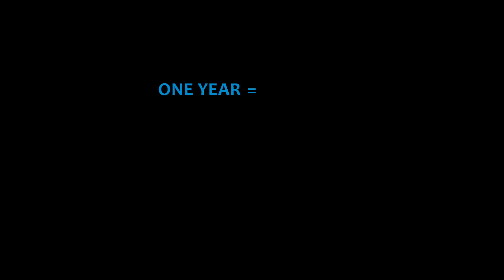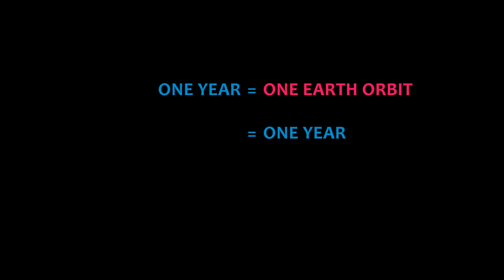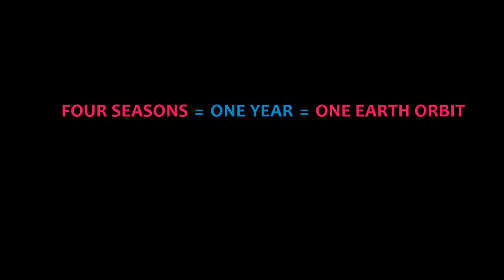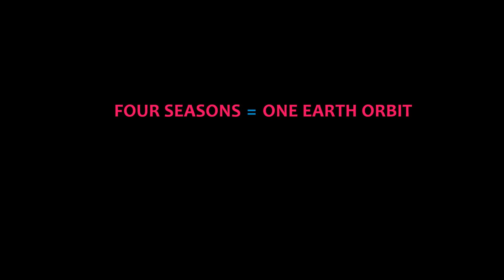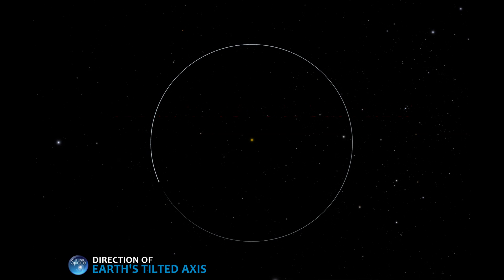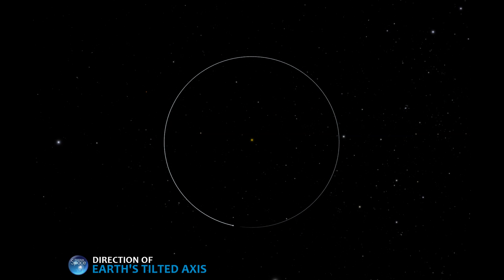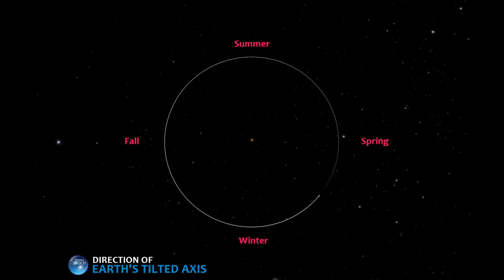It takes one year for Earth to complete just one orbit around the Sun. It also takes one year to complete four seasons. So that means we can say that it takes four seasons to complete one orbit around the Sun. That's why we can connect Earth's seasons to each section of the orbit. Each season represents one part of the year around the Sun.